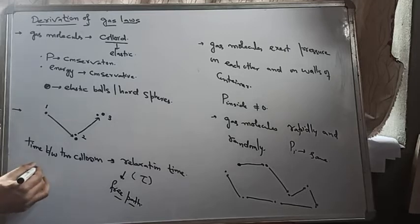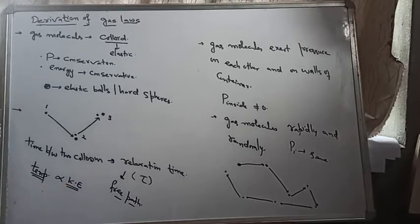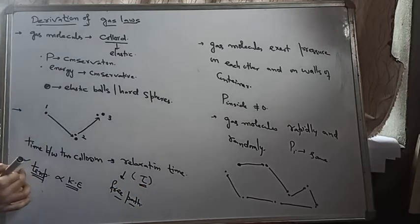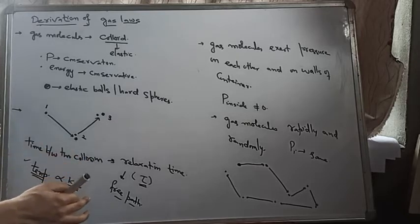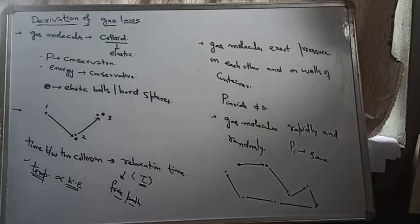As the temperature of gas increases, the kinetic energy of the molecules increases. If kinetic energy increases, the molecules move faster. Faster motion means more collisions. When collisions increase, the molecules do not get enough time to relax. Therefore, the relaxation time decreases and the mean free path is also reduced. These were very important postulates of kinetic theory of gases.